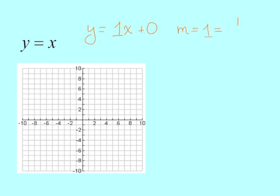So my slope is 1, which is actually 1 over 1, rise 1, run 1. And my y-intercept is 0. You can also think of y equals x as whatever the x value is, the y value is exactly the same. So I'm going to put my y-intercept at the origin, rise 1, run 1, put a few more points, and extend my line.